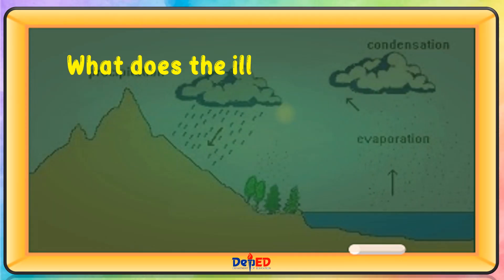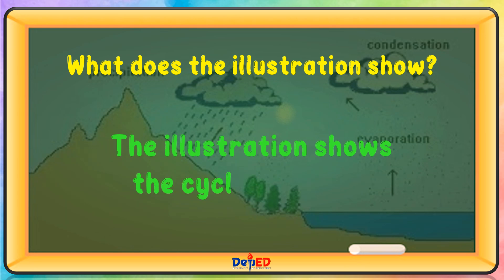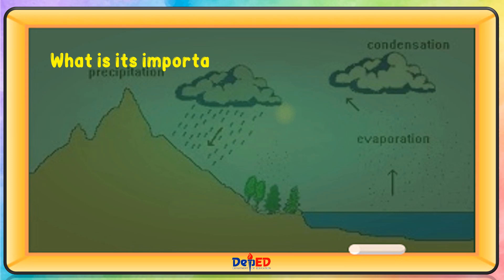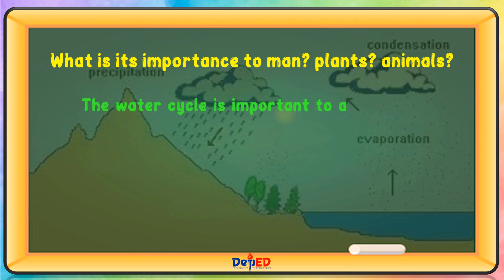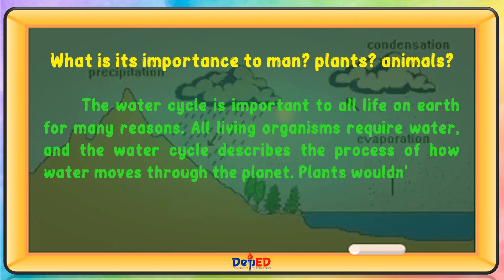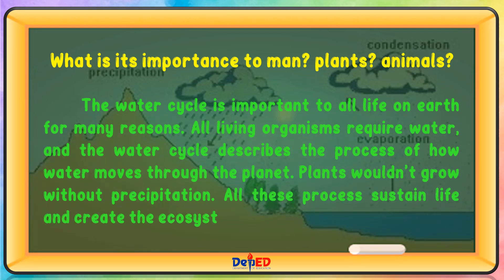What does the illustration show? The illustration shows the cycle of water. What is its importance to man, plants, and animals? The water cycle is important to all life on Earth. All living organisms require water, and the water cycle describes how water moves through the planet. Plants wouldn't grow without precipitation, and all these processes sustain life and create the ecosystems around us.